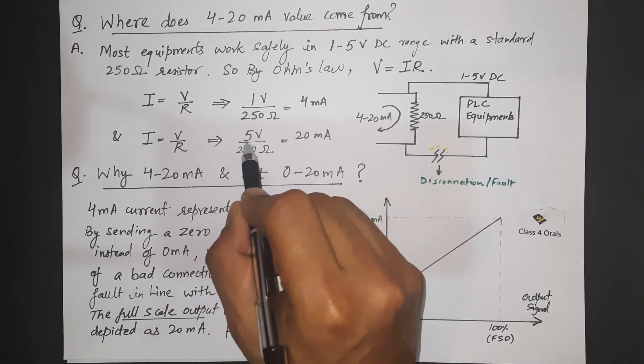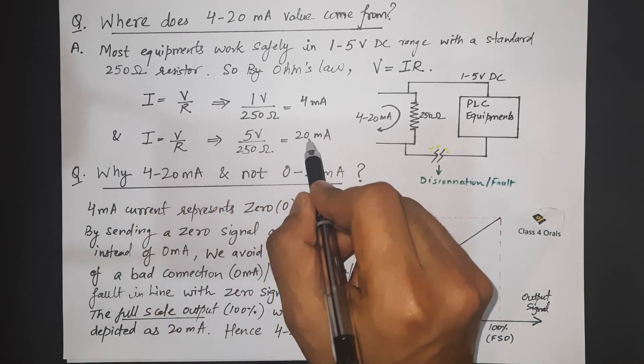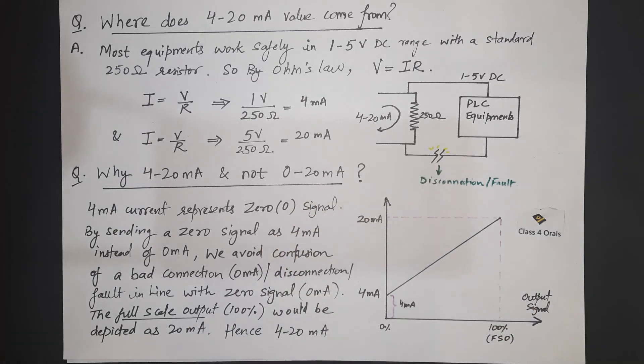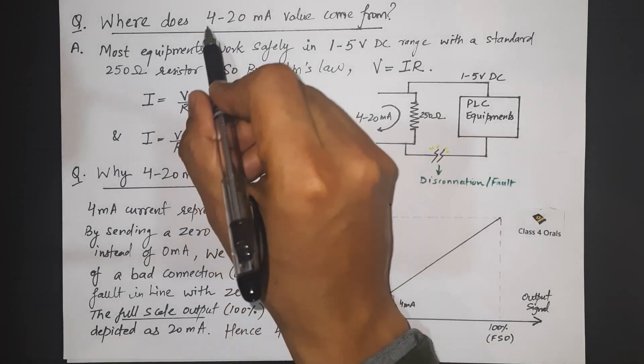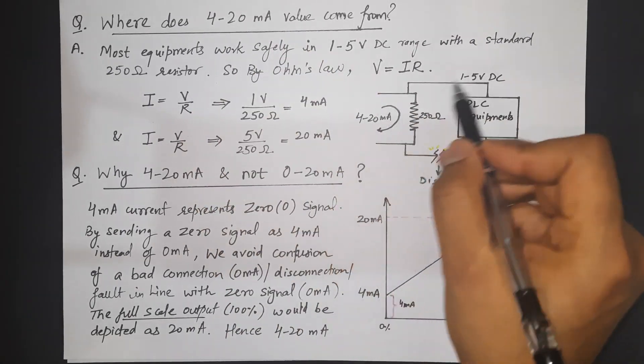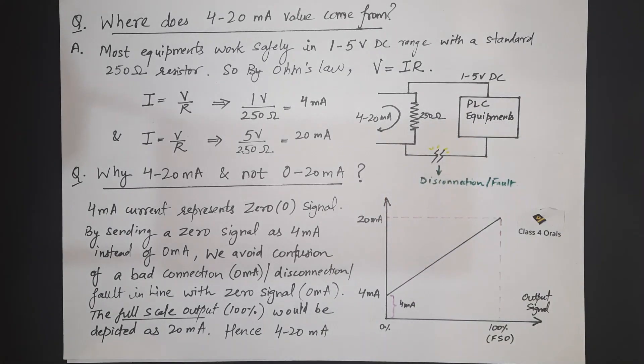Similarly for 5 V this current is going to come 20 mA. That's why this 4 to 20 mA range has come in contrast to the 1 to 5 V DC.